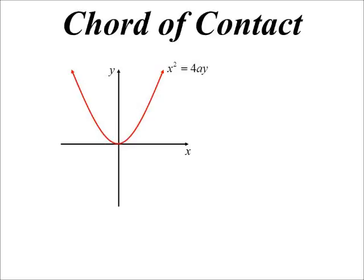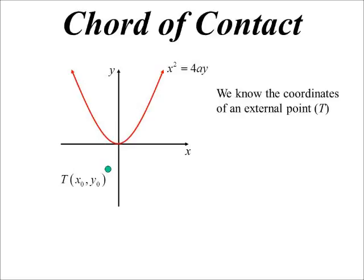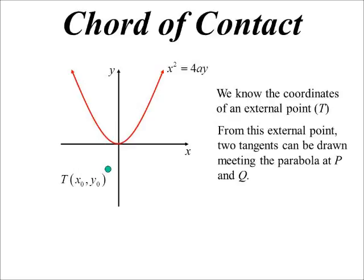There's our standard parabola. Now, as we've seen, from any external point to any conic, not just a parabola, to a circle, to a hyperbola, any conic, an ellipse for that matter as well, you can draw two tangents.